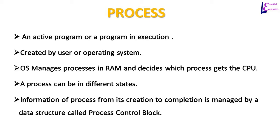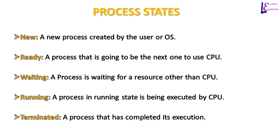To manage a process, the operating system keeps processes in different states, and information about a running process is kept in a structure called a process control block. A process is just a program or set of instructions to be executed by the CPU. The CPU is fast and can execute millions of instructions without errors, but it can be interrupted to jump to another instruction. For proper management of processes, processes are assigned states by the operating system relative to the stage in which they are to use the CPU.